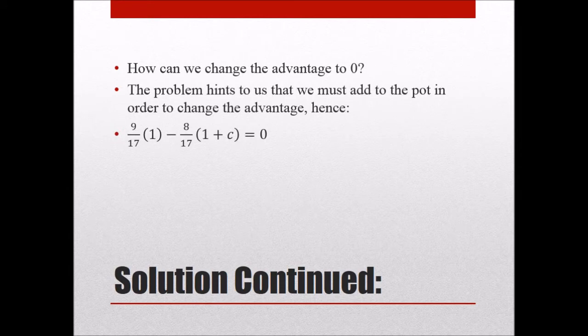So what we're going to do then is we're going to examine the difference. So we have nine over 17 times the dollar and then minus eight over 17. And then normally it was times one, but what we're going to do is we're going to add something so we can balance out the difference. And that's something we're going to just call C, which we don't know yet. So when we fully work out this problem, we're going to see that C is one over eight.